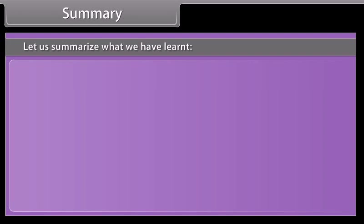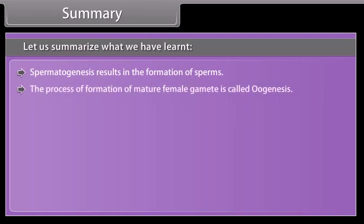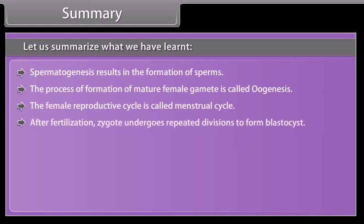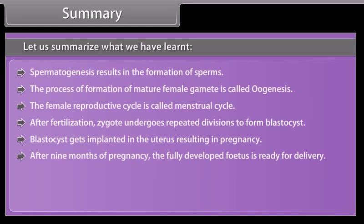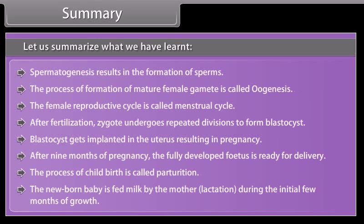Let us summarize what we have learned. Spermatogenesis results in the formation of sperms. The process of formation of mature female gamete is called oogenesis. The female reproductive cycle is called the menstrual cycle. After fertilization, the zygote undergoes repeated divisions to form a blastocyst. The blastocyst gets implanted in the uterus resulting in pregnancy. After 9 months of pregnancy, the fully developed fetus is ready for delivery. The process of childbirth is called parturition. The newborn baby is fed milk by the mother through lactation during the initial few months of growth.